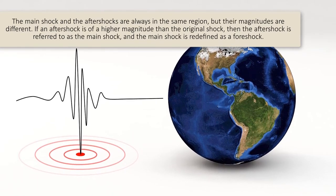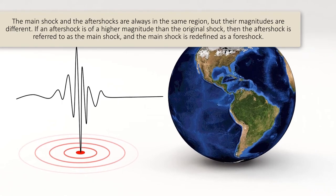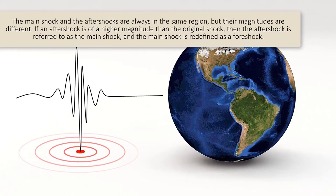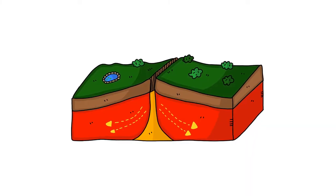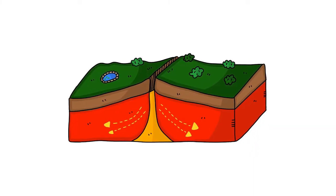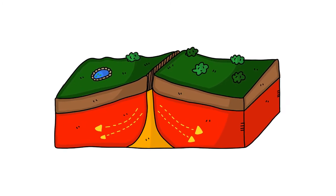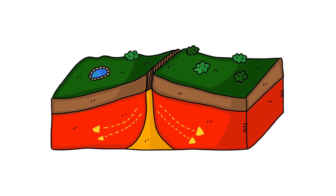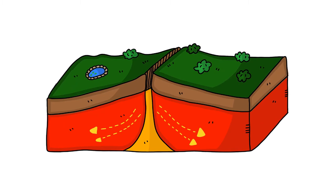If an aftershock is of a higher magnitude than the original shock, then the aftershock is referred to as the main shock and the original main shock is redefined as a foreshock. Aftershocks occur as the crust of the earth adjusts itself to the displaced plane, away from the fault plane at a distance equal to the length of the rupture.